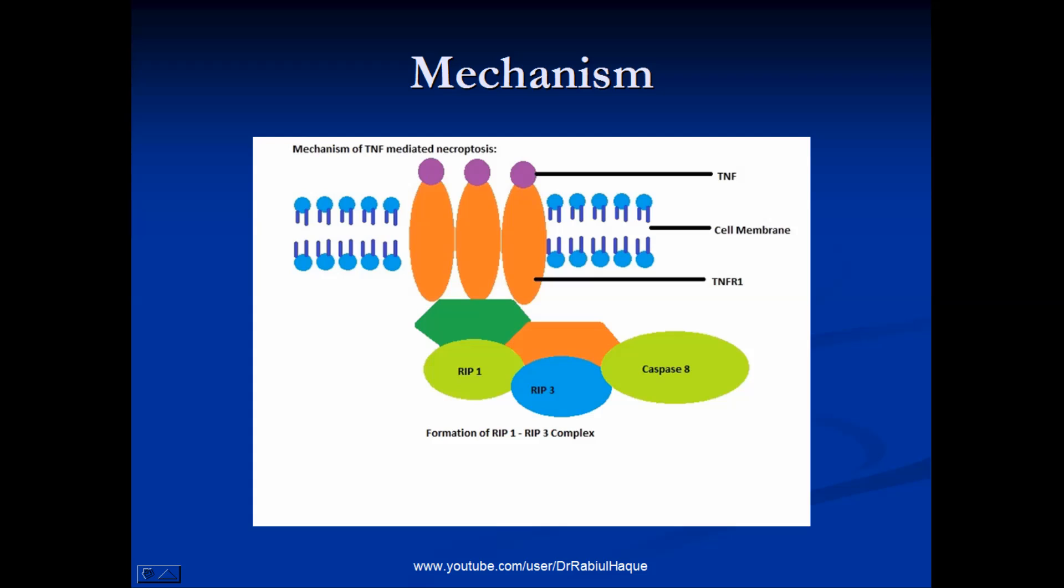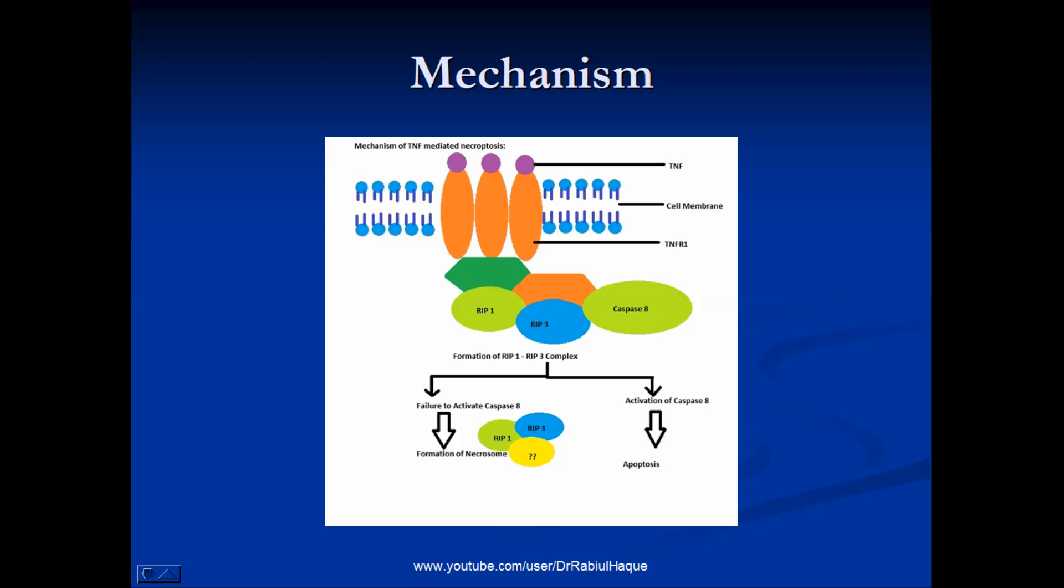Then what will happen? This recruited RIP1 and 3 will form a multiprotein complex that will also contain caspase-8 among other things. Now recall that if caspase-8 of this multiprotein complex gets activated, that will result in apoptosis. So in order for necroptosis to happen, there must be failure to activate caspase-8 as shown in the image.